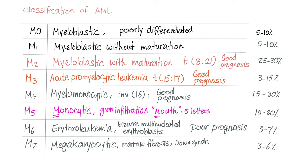The classification of AML: if you're short on time, focus on the high-yield subtypes. M2 is the most common — called myeloblastic with maturation — with translocation t(8;21) and favorable prognosis. M3, also known as acute promyelocytic leukemia, has translocation t(15;17) and also carries favorable prognosis. M5 is called monocytic and is associated with gum infiltration or gingival hyperplasia. Remember: M5 — mouth has 5 letters.